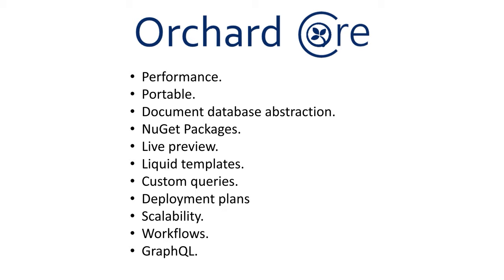Scalability: because Orchard Core is a multi-tenant system, you can host as many websites as you want with a single deployment. A typical cloud machine can host thousands of sites in parallel with database content, themes, and user isolation. Workflows let you create content approval workflows, react to webhooks, and take action when forms are submitted. Orchard Core also provides a very flexible GraphQL API, so any authorized external application can reuse your content — including SPA applications or static site generators.